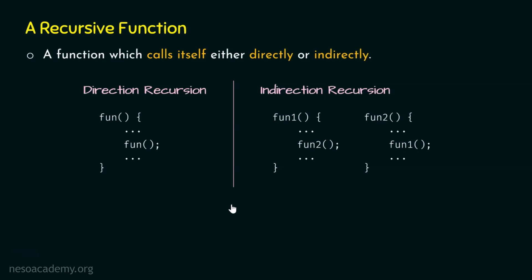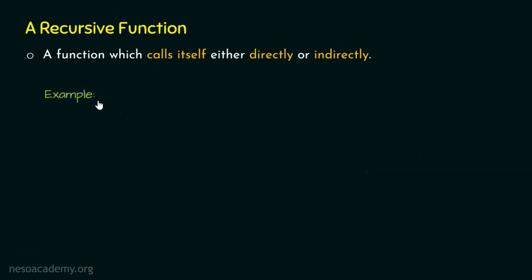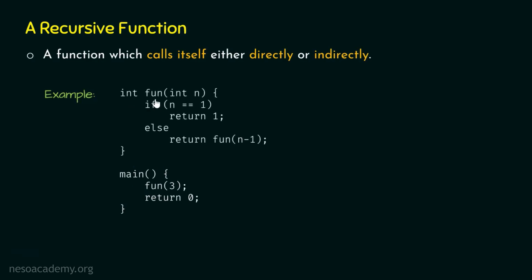Now we know what a recursive function is. Let's take a simple example and understand the working of the call stack. We will write a C program using a recursive function. Let's create the main function — execution starts from main. Within main, let's call the function fun and pass value 3 to it, then return 0. Now let's create the fun function with integer return type and parameter n, which receives value 3. We check: if n equals 1, return 1; otherwise, return fun(n - 1). Since fun calls itself within its own body, this is a recursive function.